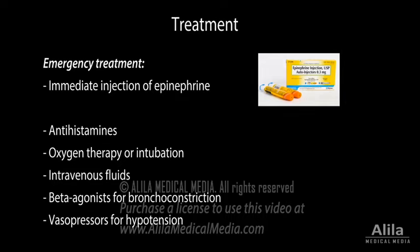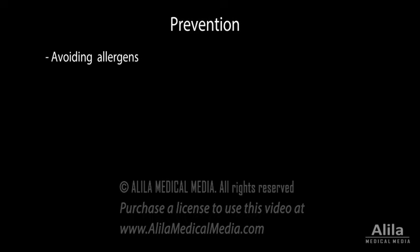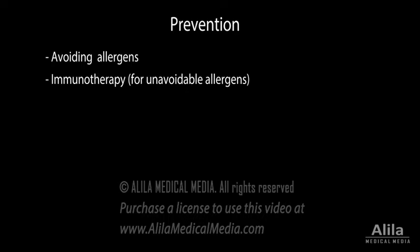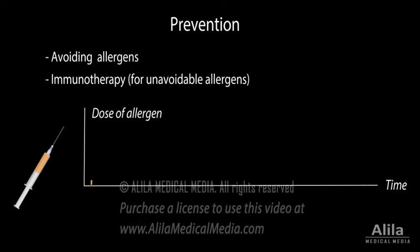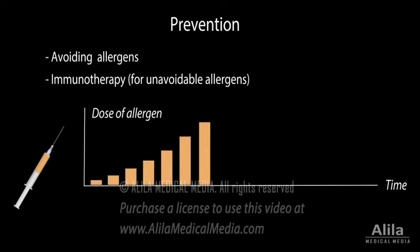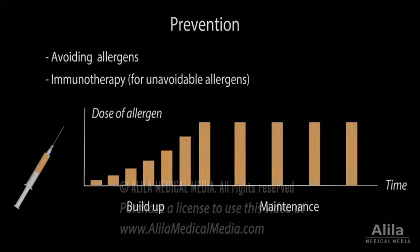The best way to prevent anaphylaxis is to avoid the triggers. People with serious reactions to unavoidable allergens may benefit from immunotherapy. In immunotherapy, patients are injected weekly with gradually increasing doses of the allergen, starting with a tiny amount. This process desensitizes the immune system, reducing reactions to the allergen, but may take several years to complete.